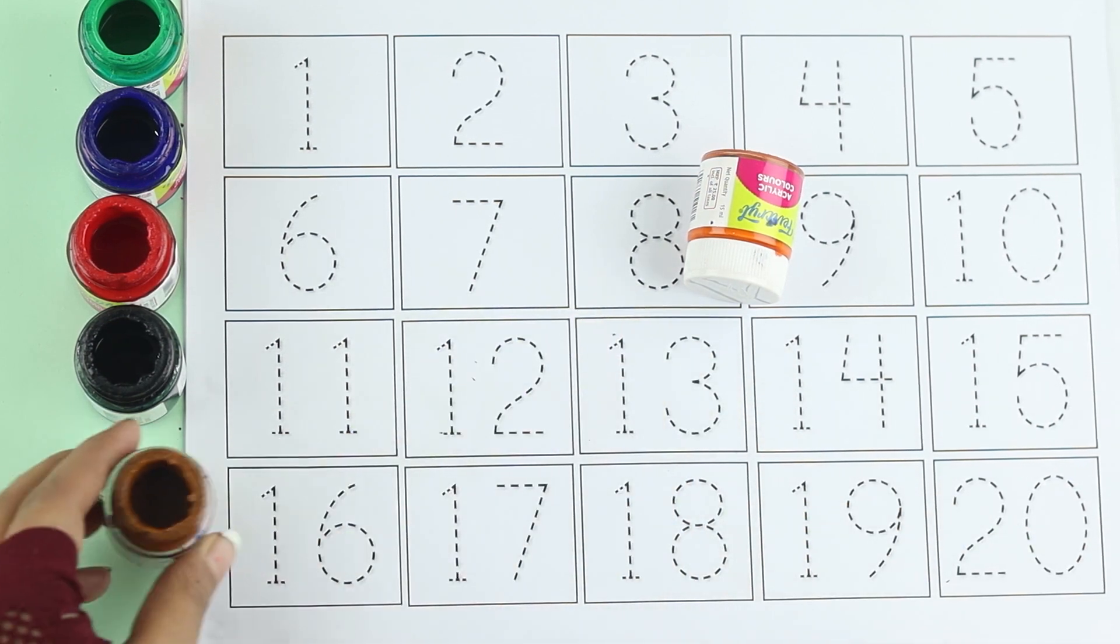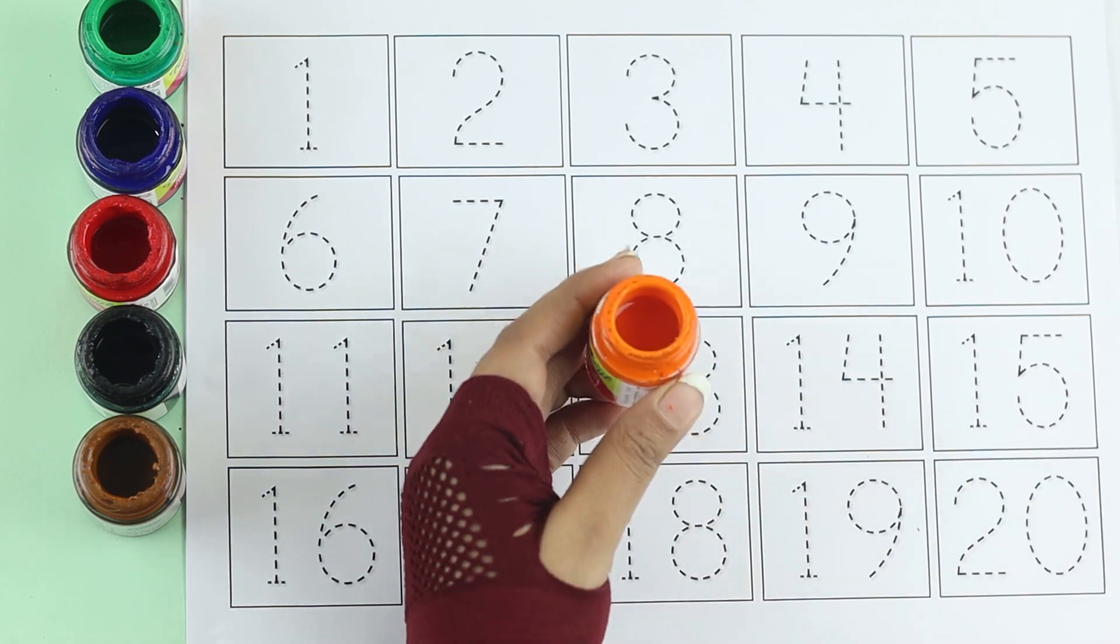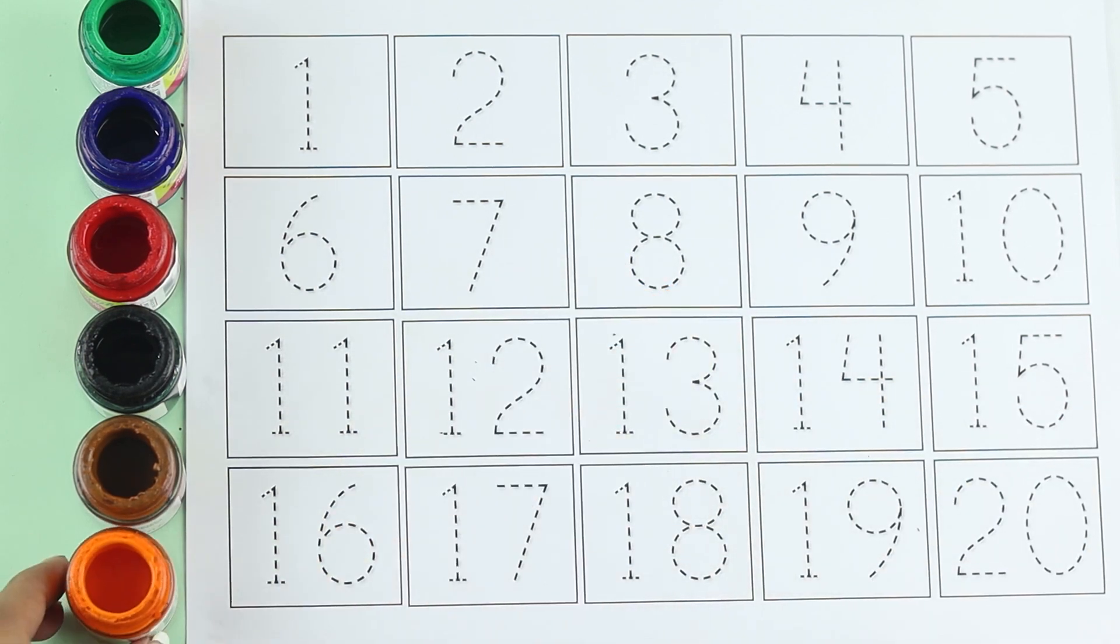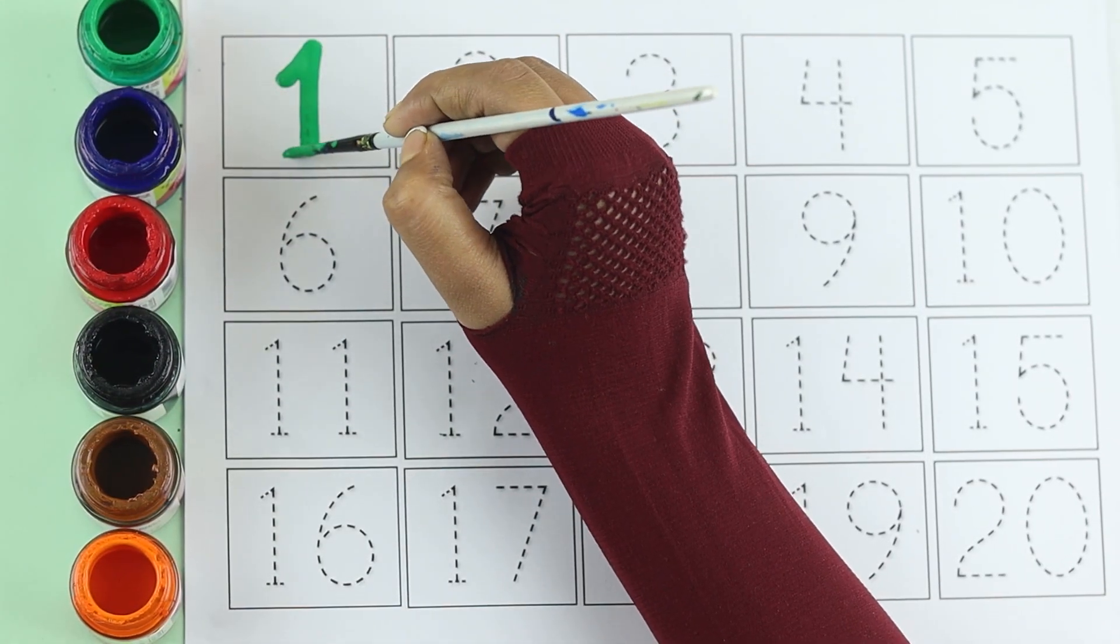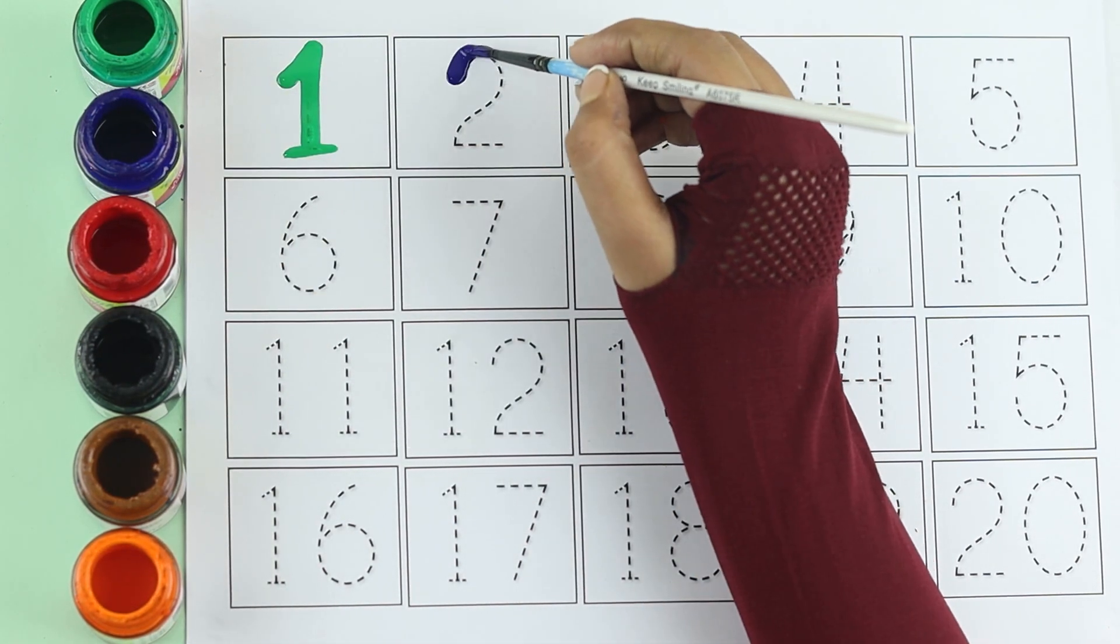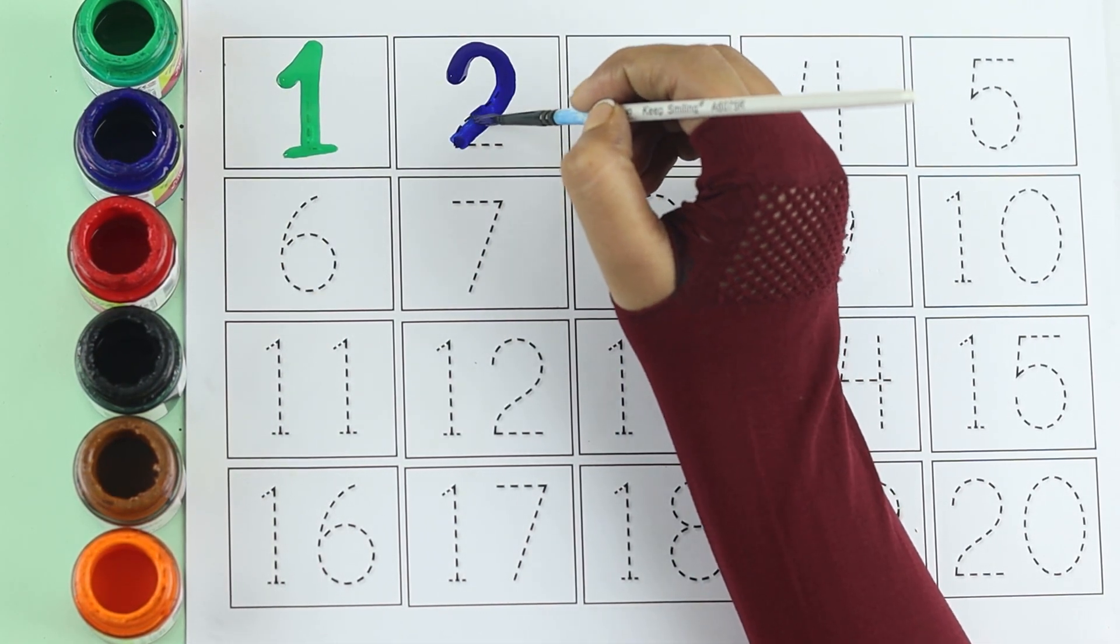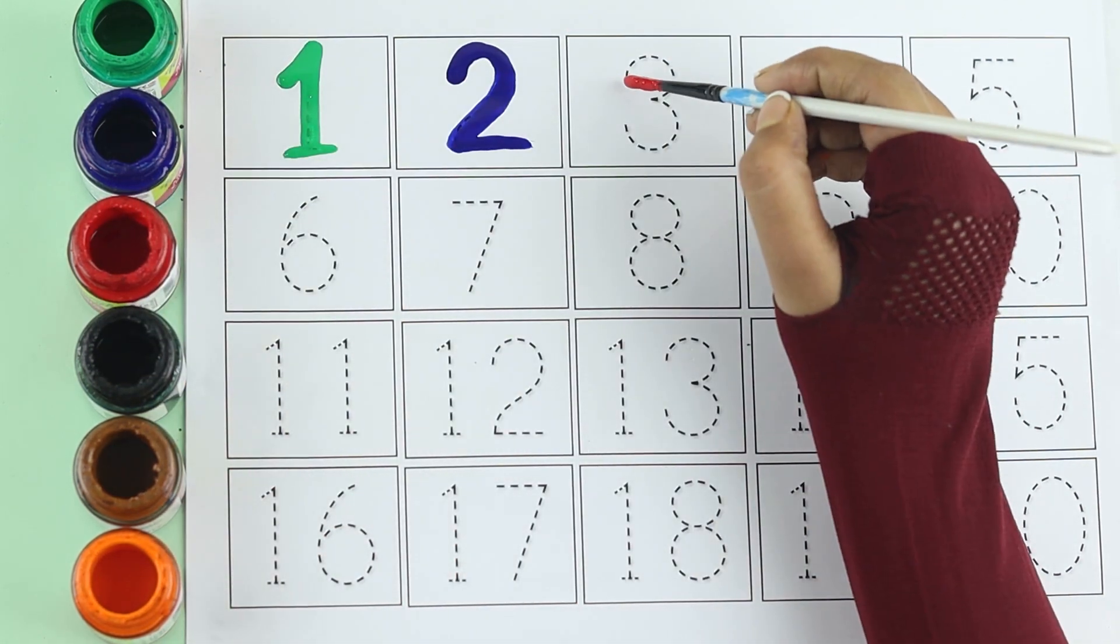Brown color, orange color. Green color one, blue color two, red color three.